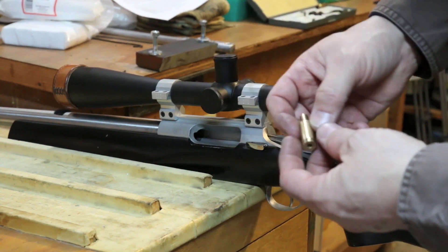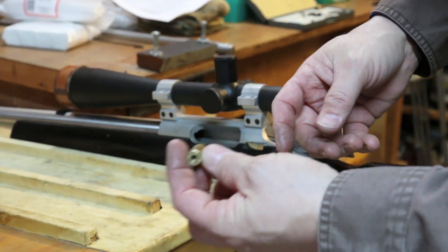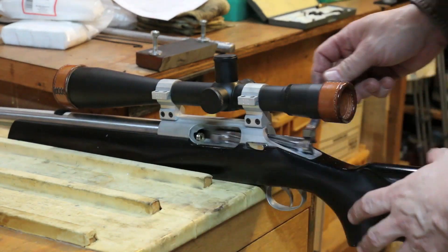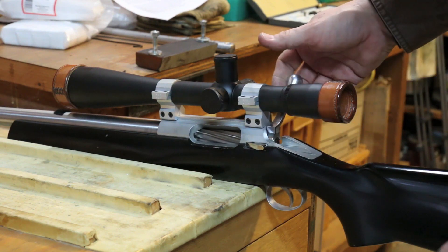This brass has been sized by a shoulder bump die and the primer has been removed. I'll show you how it still fits a bit tight in this chamber. You see how the bolt closes rather tightly.